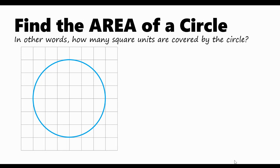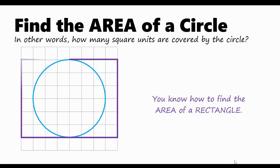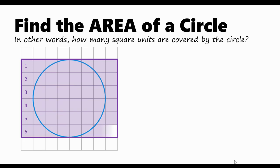Let's start with something that you already know. You know how to find the area of a rectangle. We can count the number of rows and the number of square units in each row. So, 6 rows, 8 square units in each, 6 times 8 is 48 square units.